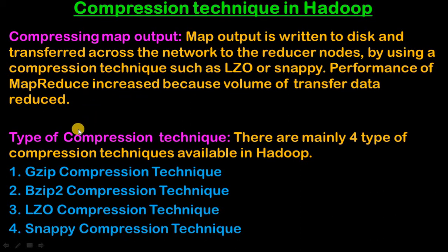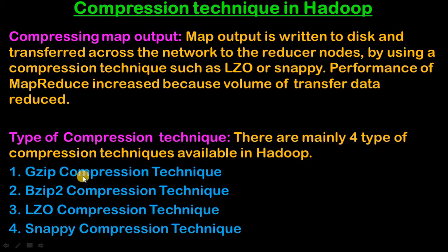Now let's see the types of compression techniques. There are mainly 4 types of compression techniques available in Hadoop: first is Gzip, second is Bzip2, third is LZO, and fourth is Snappy.